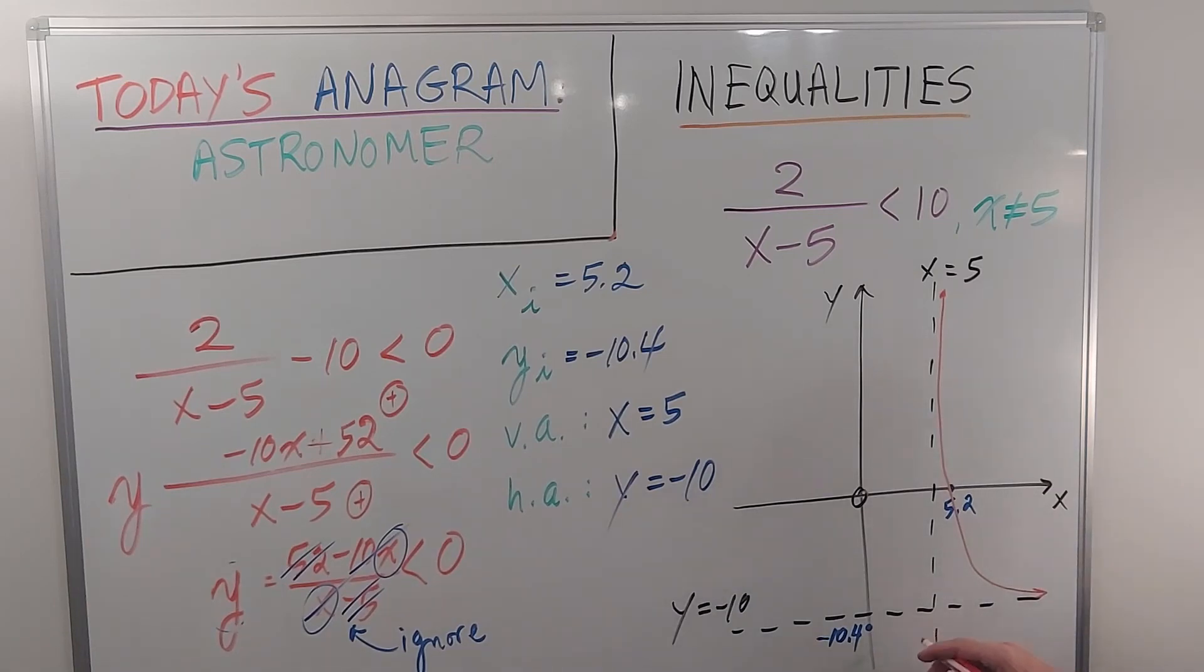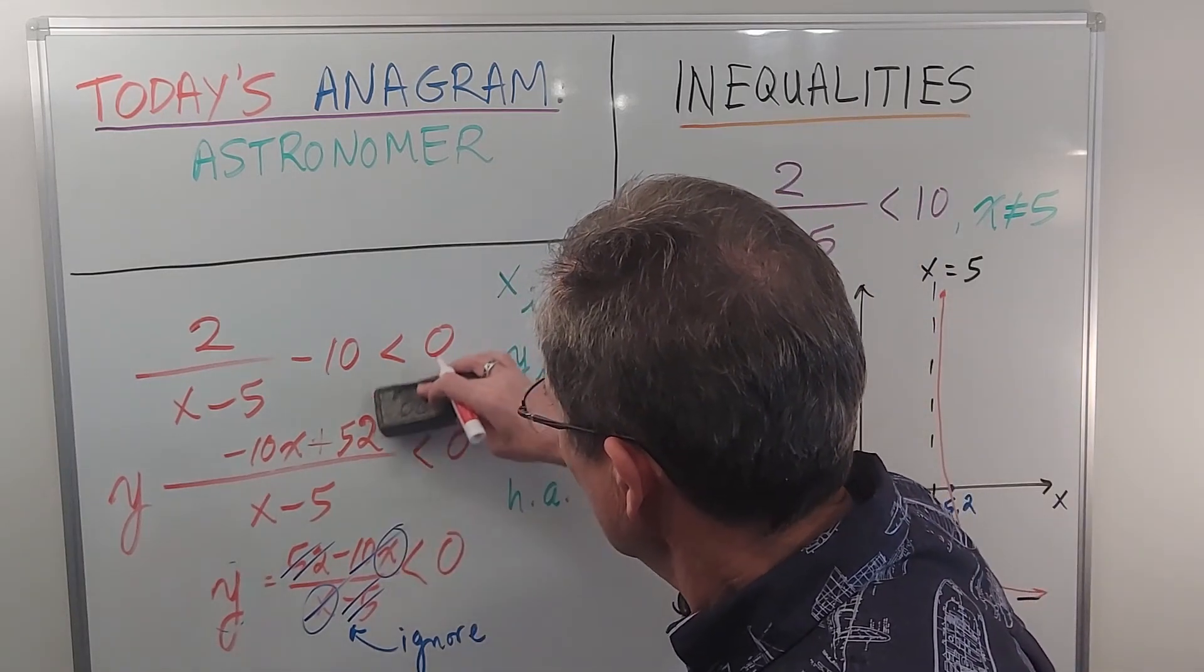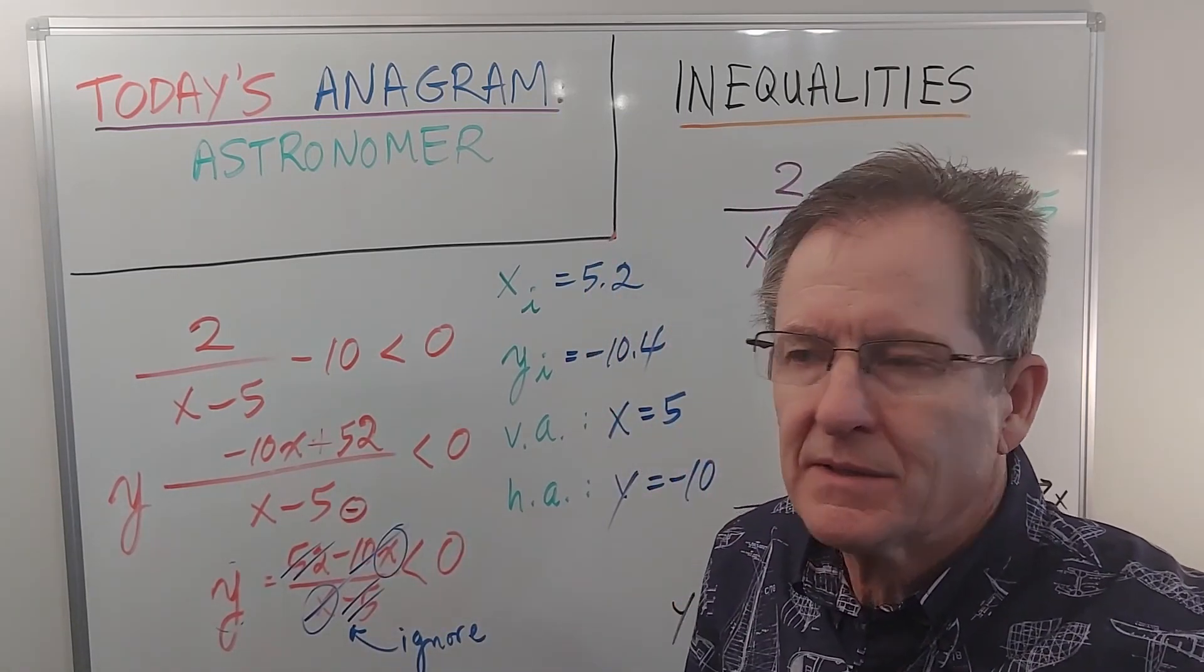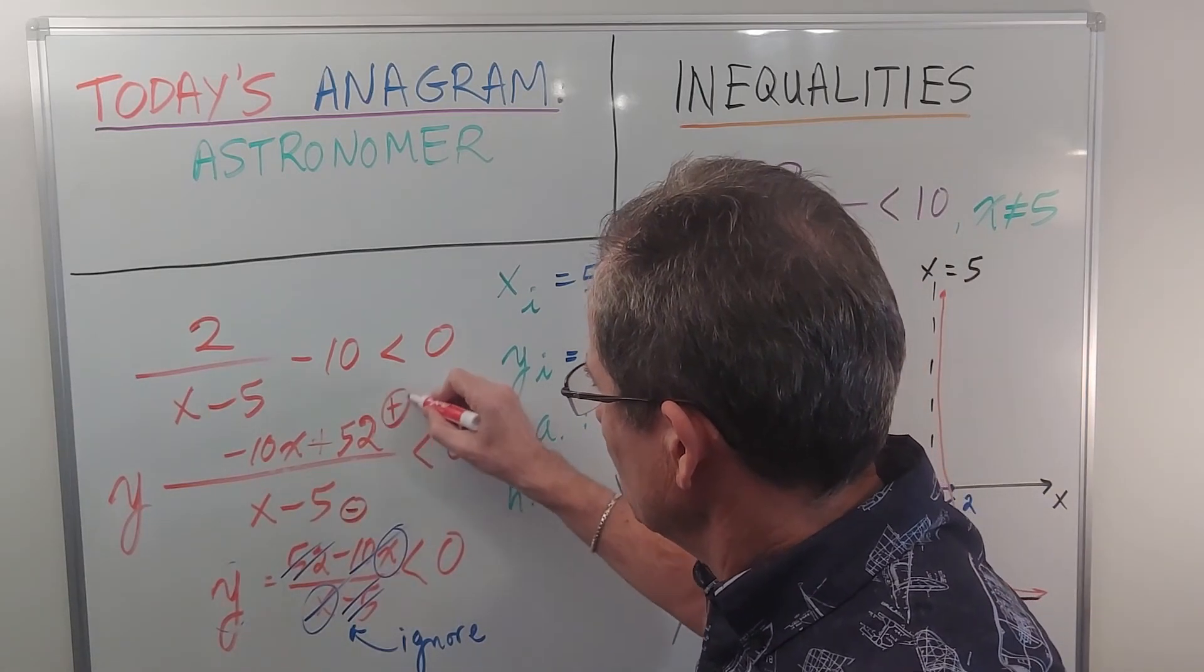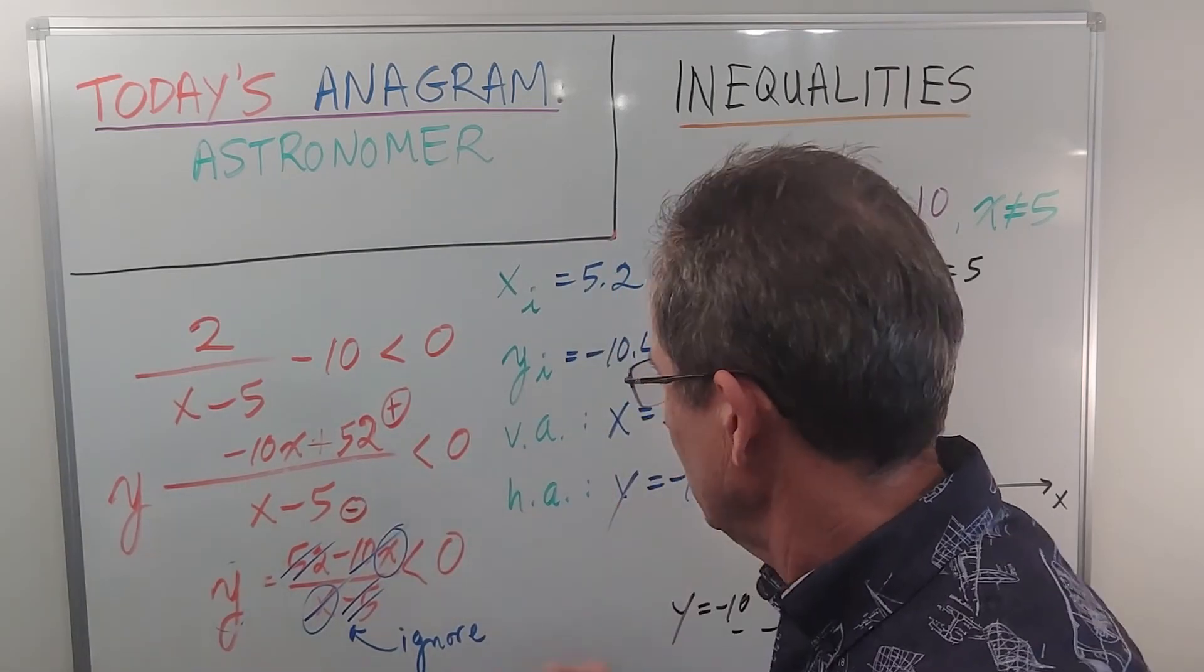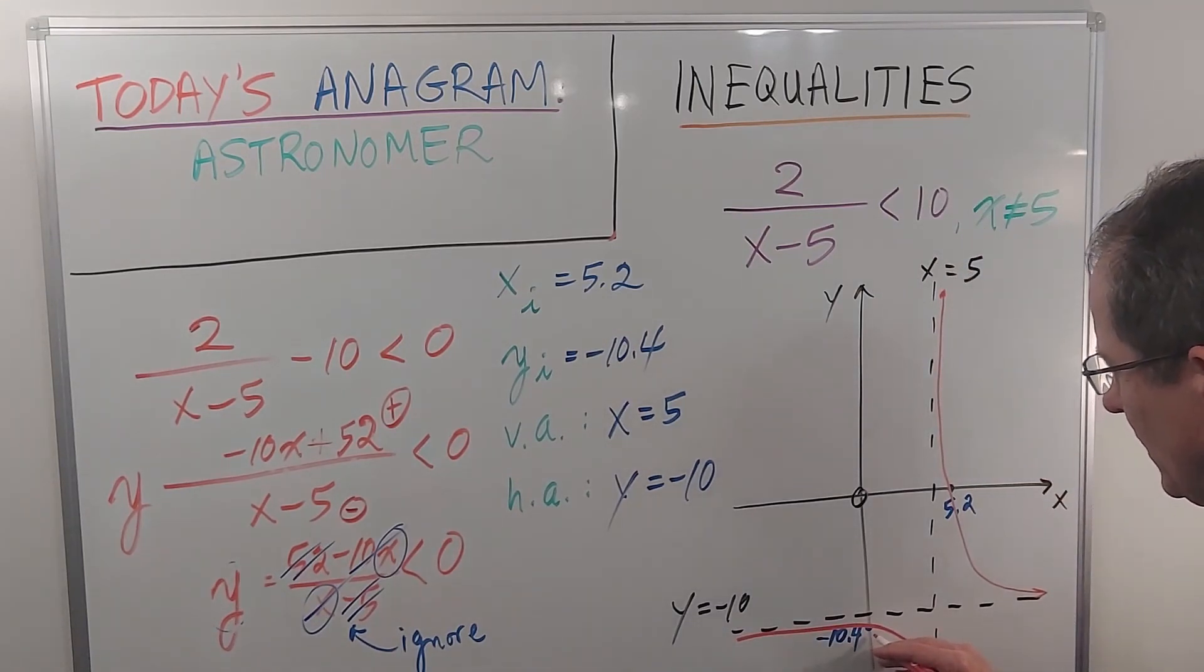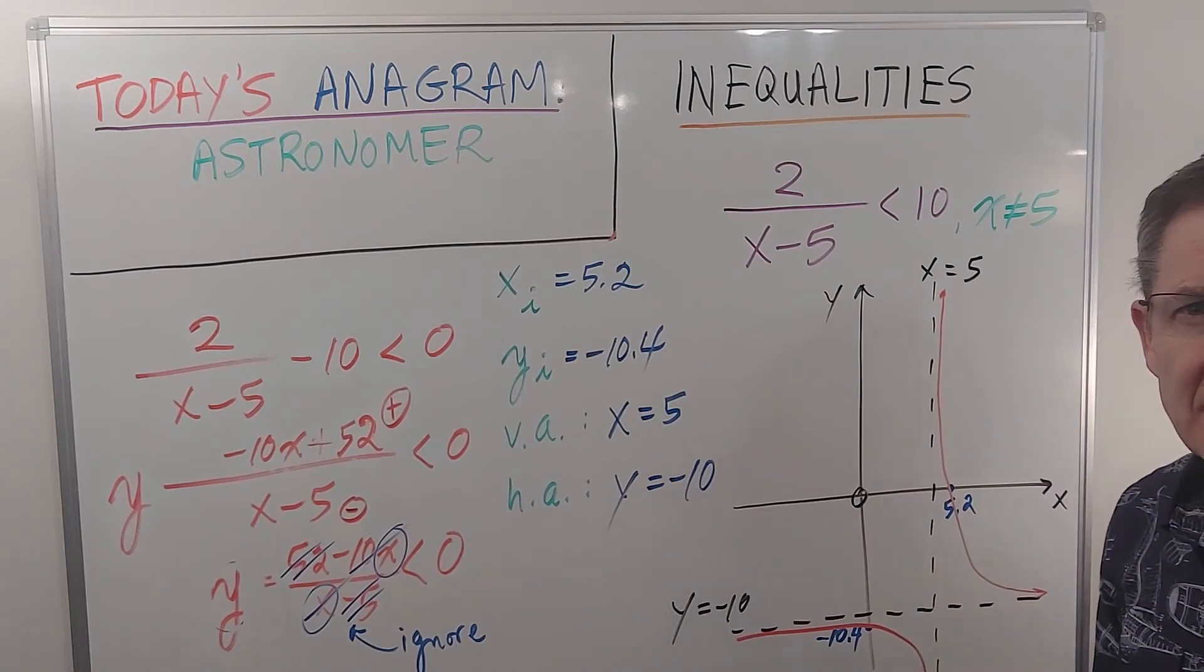Similarly, if I put a number slightly smaller than 5, this will be slightly negative, like negative 0.01 or something. And that will be positive. So a positive number divided by a very small negative number will be a big negative number. So the graph is going to go like this. It's got to go through negative 10.4, the y-intercept, and it goes down.